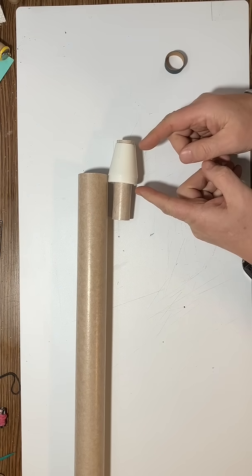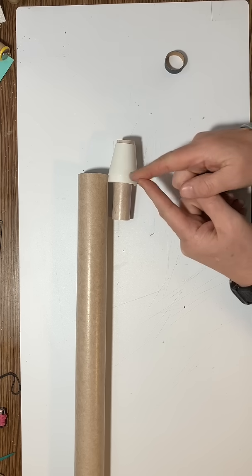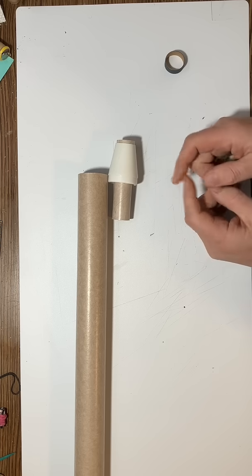This tail cone measures 50 millimeters from the end all the way up to the shoulder. Notice the shoulder is going to be inside the body tube, so we have to account for that.